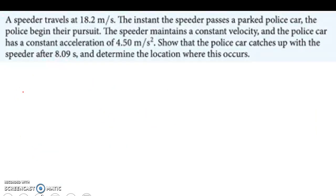The speeder travels at 18.2 meters per second. The instant he passes the parked police car, the police begin their pursuit. The speeder maintains a constant velocity, so the guy speeding doesn't speed up. But the police car accelerates 4.5 meters per second squared. Show that the police car catches up with the speeder after 8.09 seconds and determine the location where this occurs. A lot to think about here. Don't get overwhelmed.